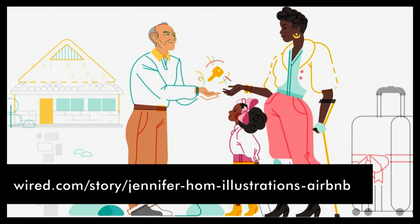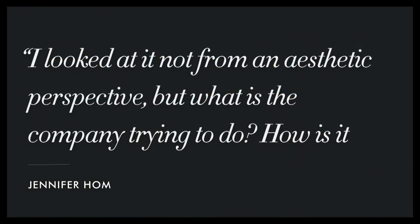Wired recently featured Jennifer Hom, who's speaking later — she was interviewed about the illustration system at Airbnb. She said, 'I looked at it not from an aesthetic perspective, but what is the company trying to do? How is it moving into the future?' Values are what's important to an organization. They drive the decisions you make and influence the expectations for work ethic. I first really understood this when I was working at Apple earlier in my career. The values of quality, simplicity, designing with autonomy from the rest of the industry, removing the unnecessary — all of that permeated everything we worked on at Apple.